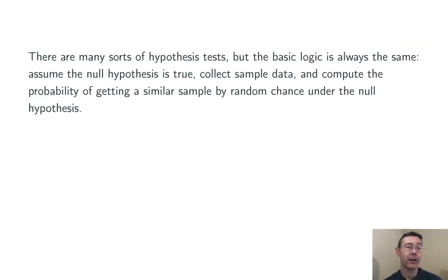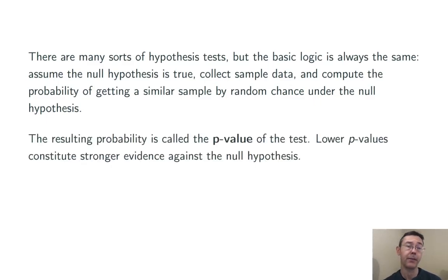There are lots of different kinds of hypothesis tests, the most common being Z and T tests for the population mean, but the basic logic is always the same. You assume the null hypothesis is true, collect some sample data, and then compute the probability of getting a similar sample just by random chance under the assumption of the null hypothesis.